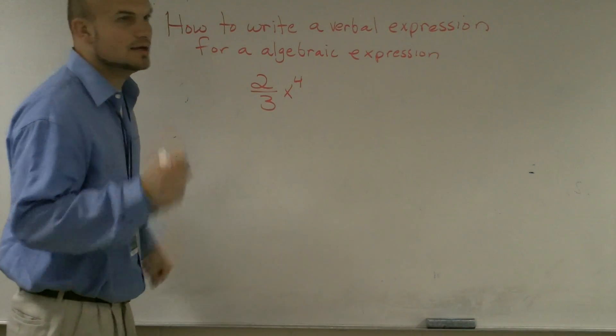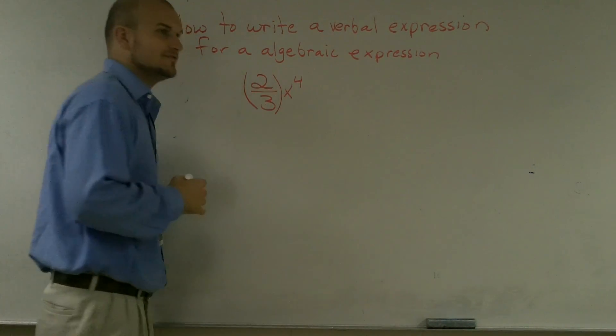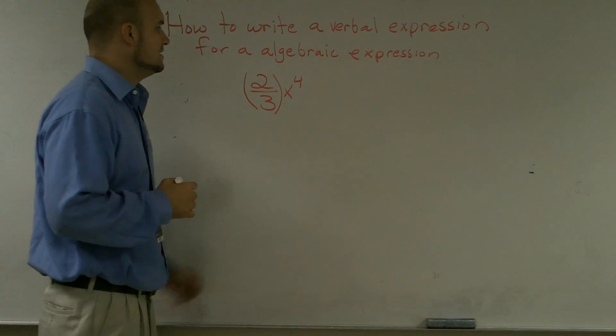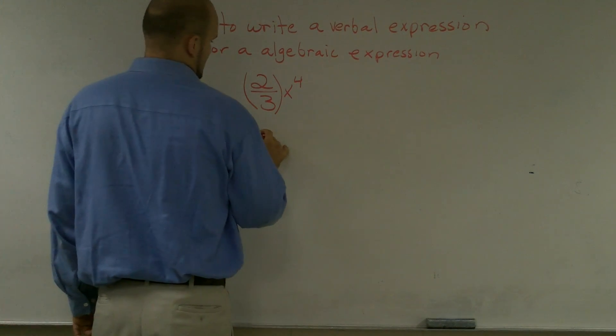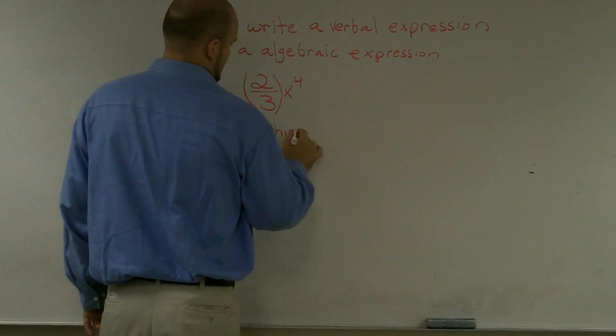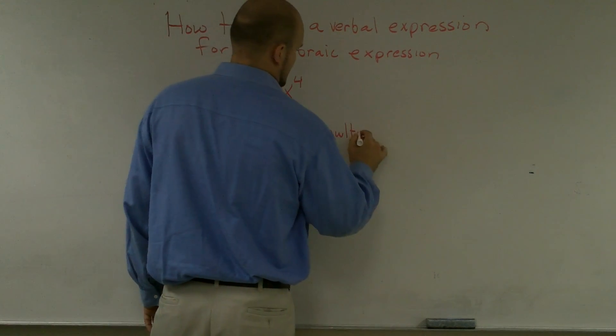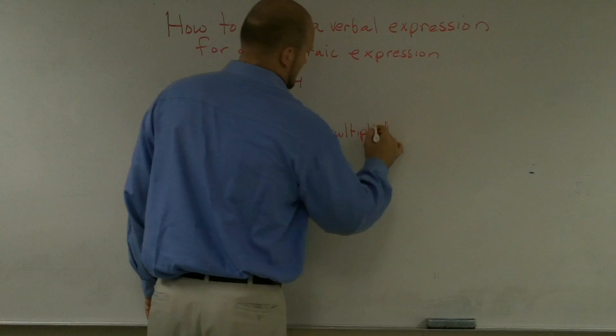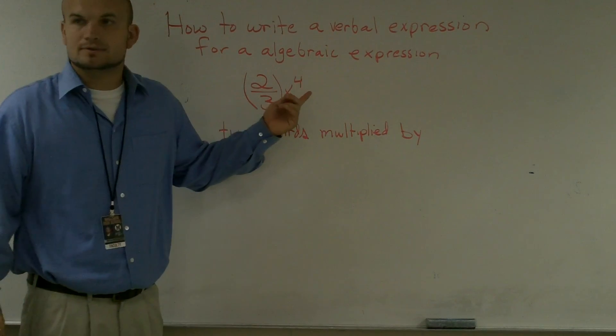The first part is you notice we have a term two-thirds. So that's a fraction. So one way we could say is we could say two-thirds multiplied by a number raised to the fourth power.